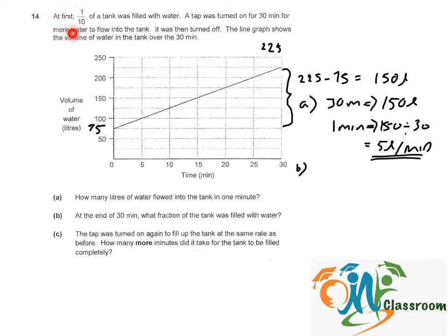It says that at first 1 over 10 of the tank was filled. So 1 over 10 of the tank is equivalent to 75 liters. The full tank will be 10 over 10, which means 10 times 75 equals 750 liters.